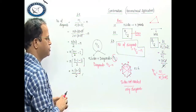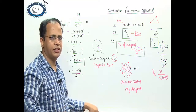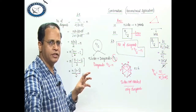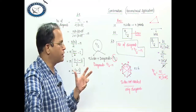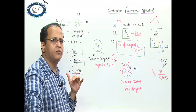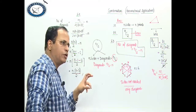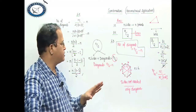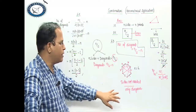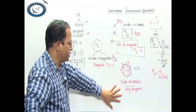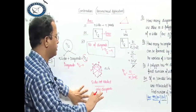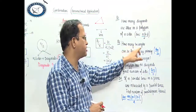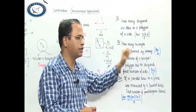I think you have understood this concept. Remember: jab bhi nC2 ki baat karte hain kisi bhi hexagon mein ya polygon mein, to nC2 ka matlab yeh hota hai ki aap poore sides aur diagonals dono ko include kar rahe hain. To jab bhi diagonals ki baat karo, aap nC2 se n ko minus kar doge. The result is n into n minus 3 by 2.